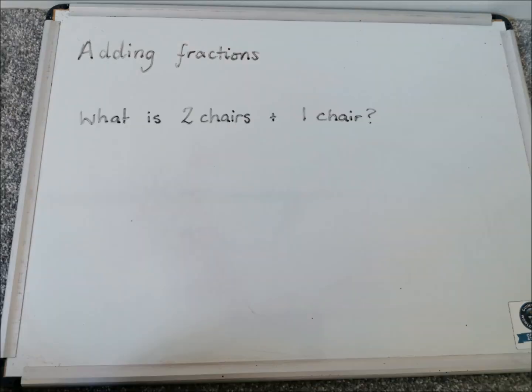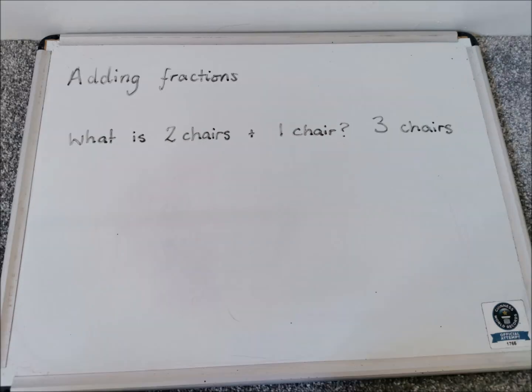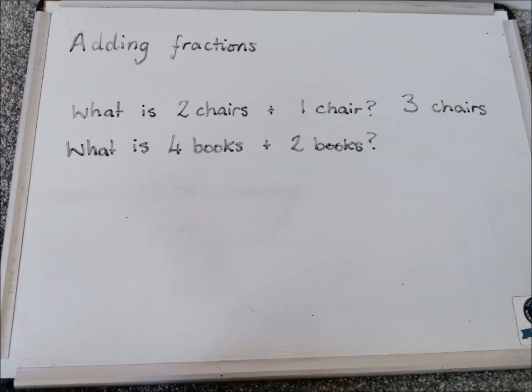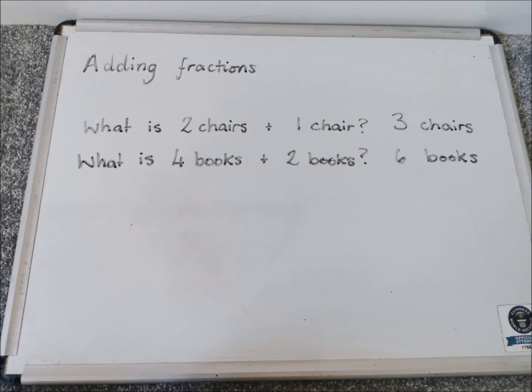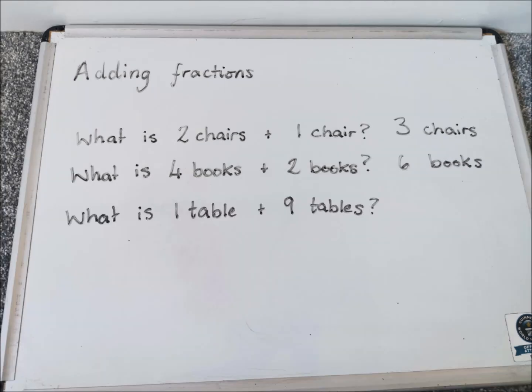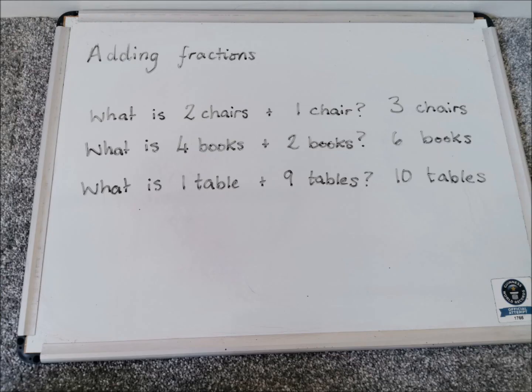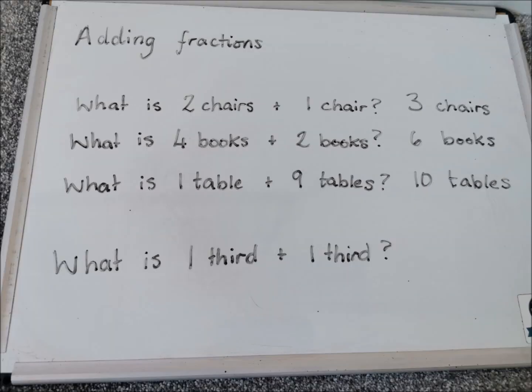So let's have a look at a very easy example. If I had this question — what is two chairs add one chair — you would be able to say straight away: two chairs add one chair is three chairs. What is four books add two books? Six books, because we know how to add these numbers. What is one table add nine tables? Ten tables. Adding is very, very simple, and the rules apply to fractions as well. So what is one third add one third? The answer is just two thirds.